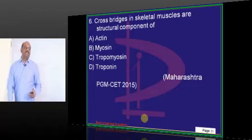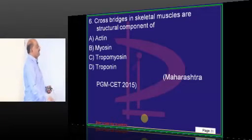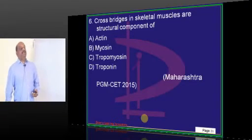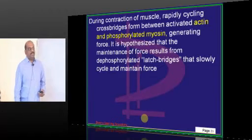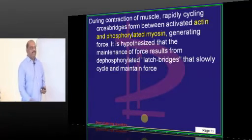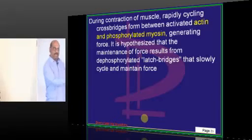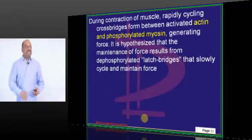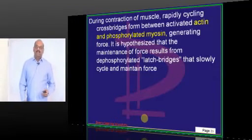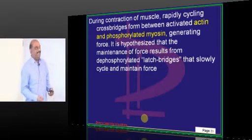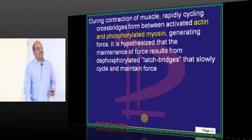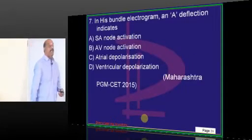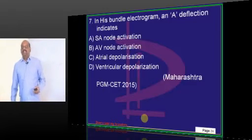Cross bridges are basically made up of myosin. In the sarcomere, if you look at recent entrance exams — even in Kerala PG — we have seen questions on titin and desmin and their function. Definitely one question will come on the sarcomere, so you have to be one hundred percent sure about this.